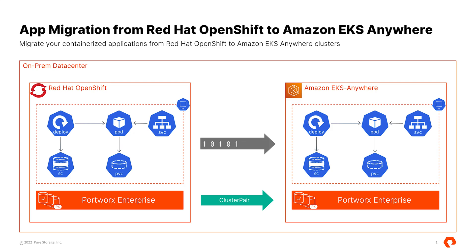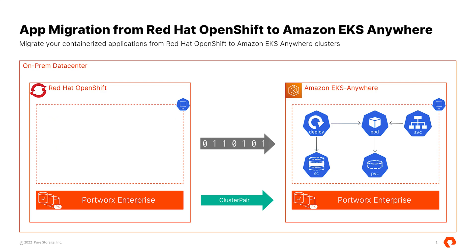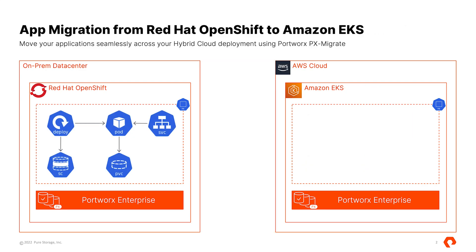In the second scenario, we'll take the same on-prem Red Hat OpenShift cluster and instead of moving it to another on-premises cluster, we'll move it to an Amazon EKS cluster running in US East 1 in the public cloud. We have a similar setup where our source cluster has Portworx Enterprise deployed running Red Hat OpenShift, and our Amazon EKS cluster also has Portworx Enterprise configured. We'll start by creating a cluster pair object between the two clusters and then define a migration spec using a YAML file.